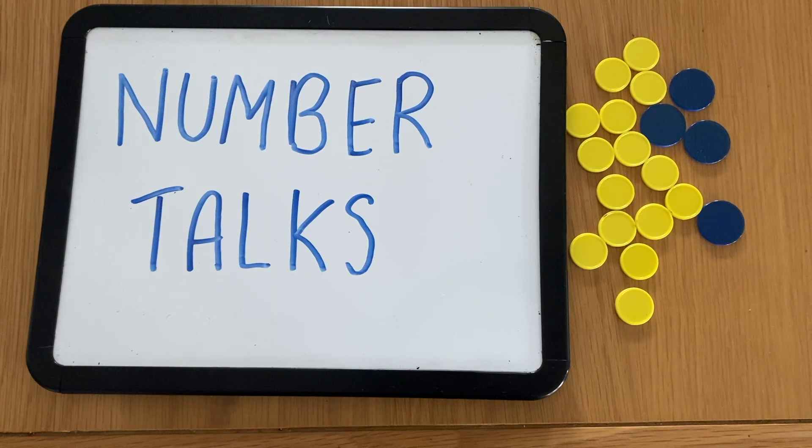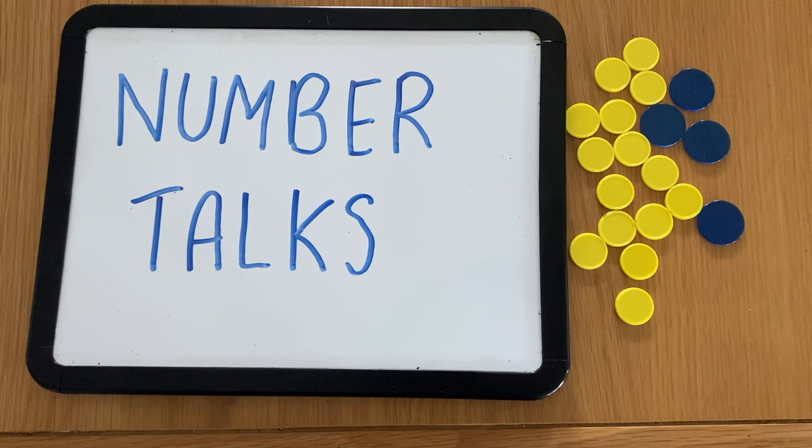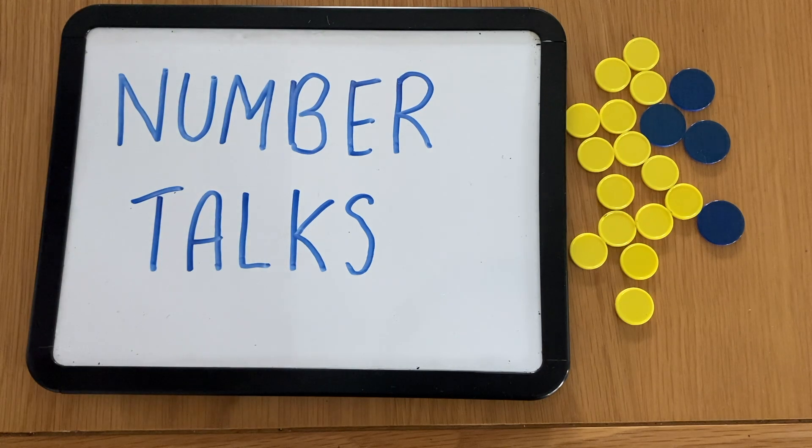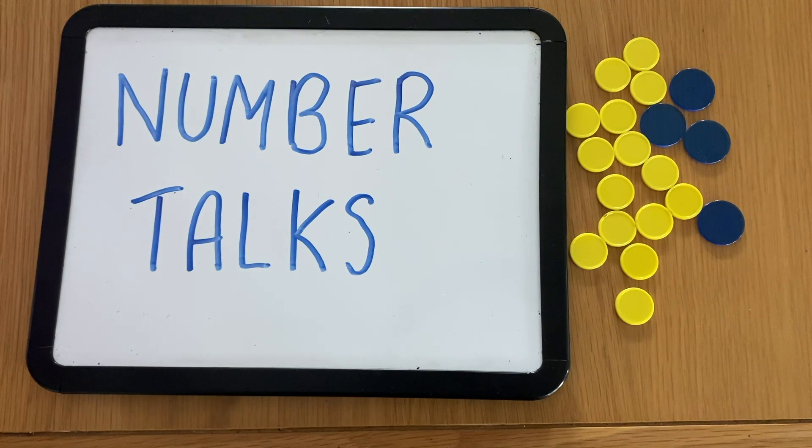The only resources that I need are a whiteboard, and I like to use one that I can move around that's on wheels, a collection of magnetic counters in different colors, and then a large piece of cardboard that I can use to conceal the collection of dots that I'm going to show the students.